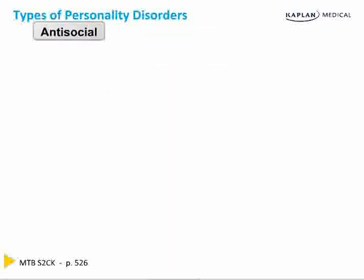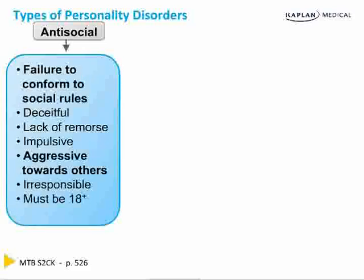Conduct disorder in childhood usually leads to antisocial personality disorder in adulthood. Here, it's a failure to conform to social rules — these people are deceitful, lack remorse, are impulsive, aggressive toward others, and irresponsible. They must be an adult; if they're less than 18, it's conduct disorder.